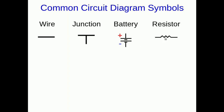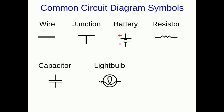A resistor is a zigzag line like this. A capacitor looks like two parallel plates. Here's a light bulb — we'll occasionally use that. And here's one type of switch. This is a switch that you can open and close; when it's open, no current can flow through, and when it's closed, current flows through. Another type of switch can switch back and forth between making a connection with this wire or with this wire.